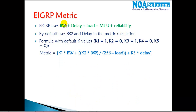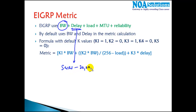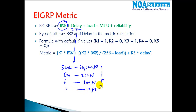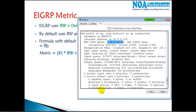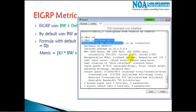Delay is calculated in microseconds. The default delay on a serial link is 20,000 microseconds. The more bandwidth you have, the less delay there will be. On Ethernet links it is approximately 200 microseconds, on Fast Ethernet it is 100 microseconds, and on a 1 Gigabit link it is 10 microseconds. You can verify the default delay of 20,000 microseconds using the 'show interface' command.